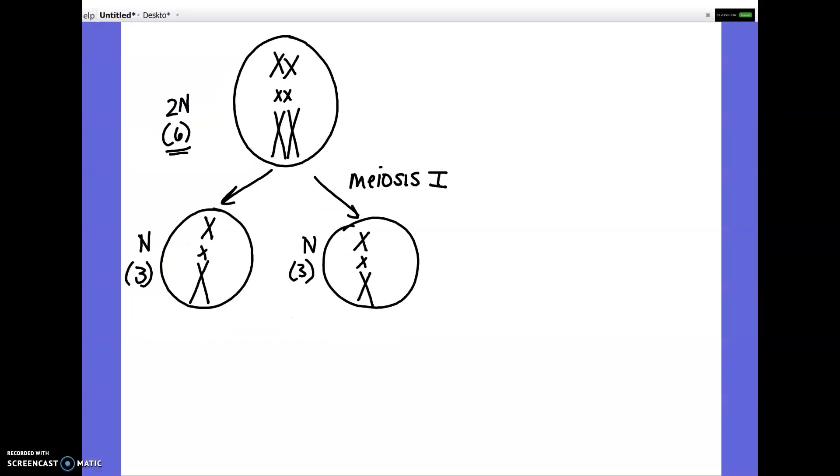So to summarize meiosis 1, here we are. I made three pairs of chromosomes in this scenario. So the 2N number for this cell, the diploid number is 6. But the haploid number, the number of different pairs, if we divide that by 2, our haploid number is going to be 3. And so in meiosis 1, these chromosomes lined up with their partners side by side. The chromosomes split, the partners split, I should say.